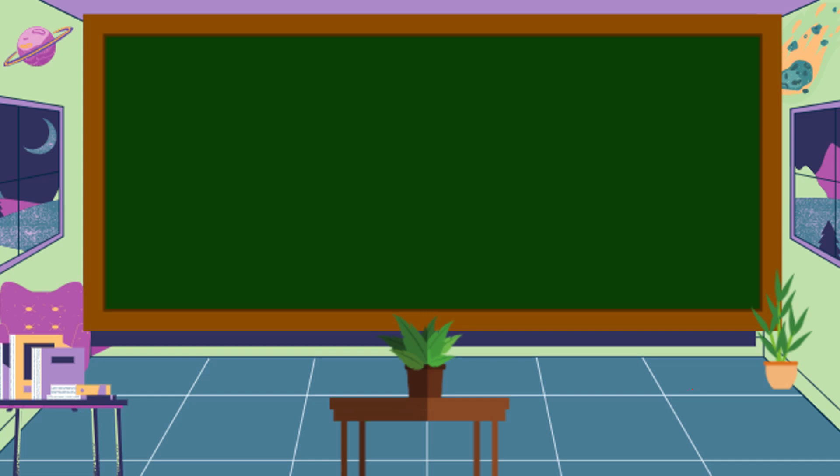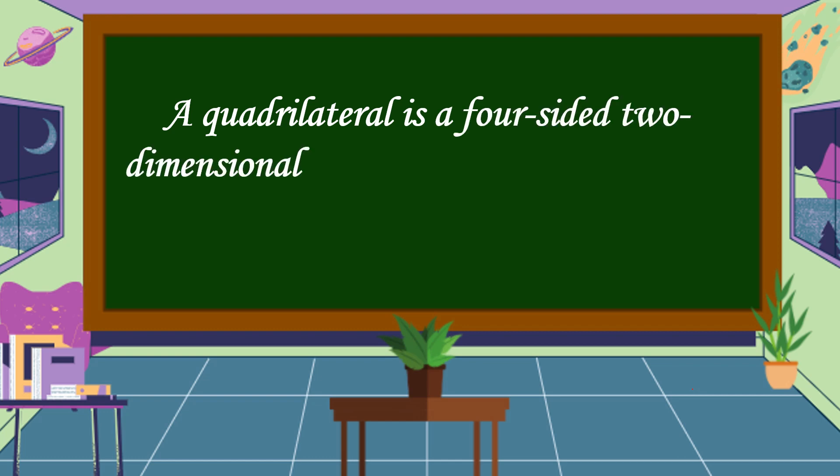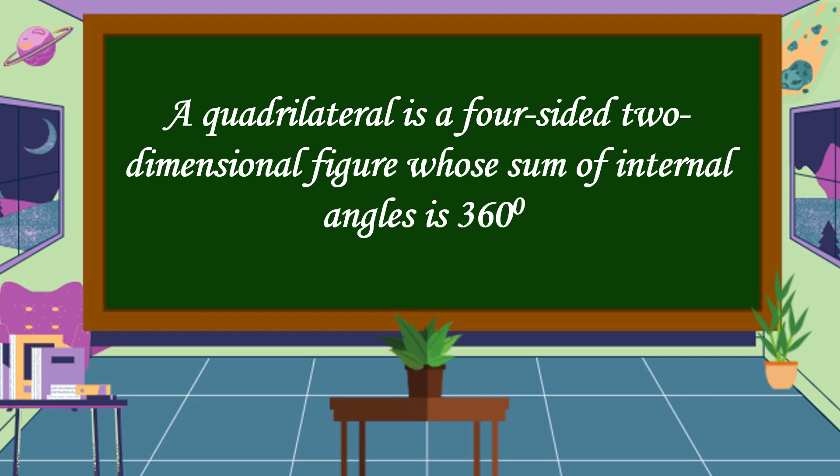Next, we're going to study about quadrilaterals. What is a quadrilateral? A quadrilateral is a four-sided, two-dimensional figure whose sum of internal angles is 360 degrees.